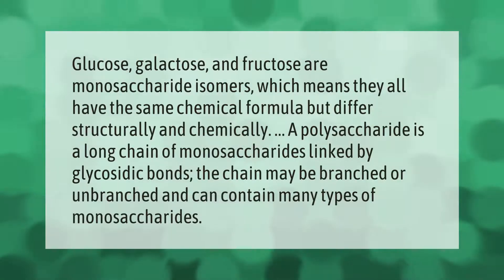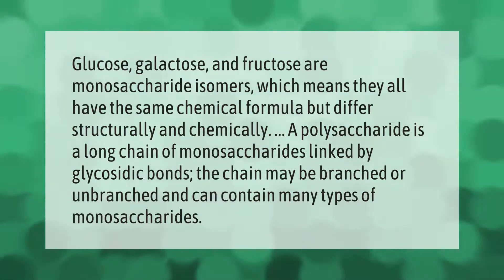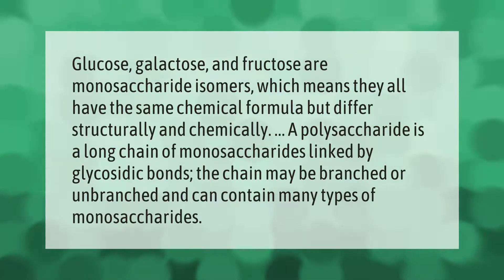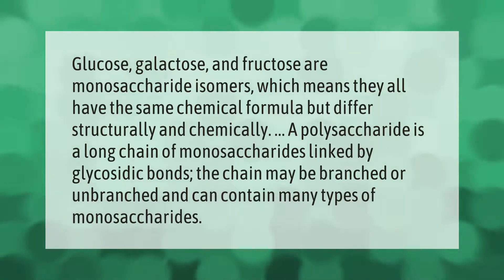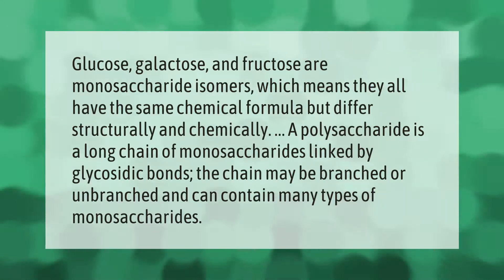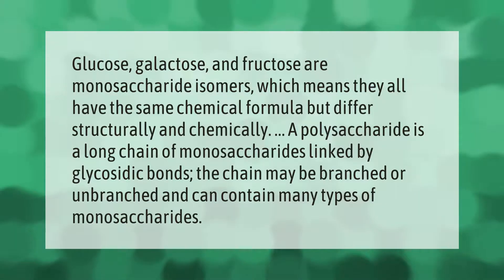Glucose, galactose, and fructose are monosaccharide isomers, which means they all have the same chemical formula but differ structurally and chemically. A polysaccharide is a long chain of monosaccharides linked by glycosidic bonds. The chain may be branched or unbranched and can contain many types of monosaccharides.